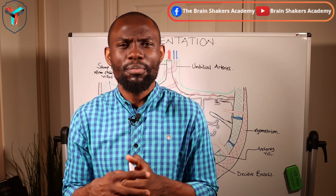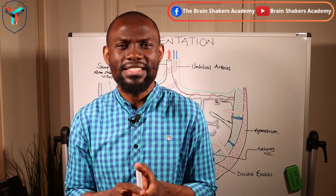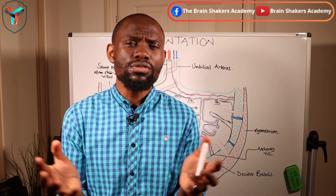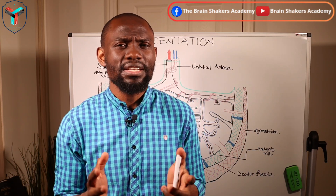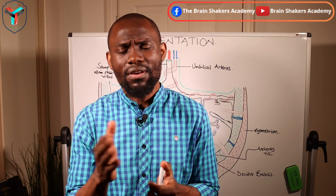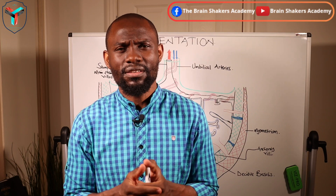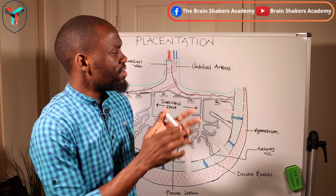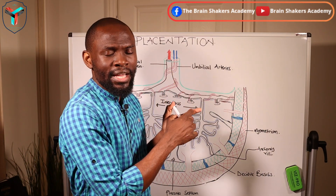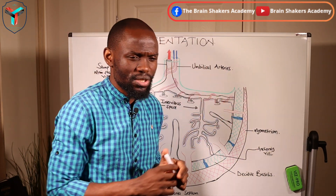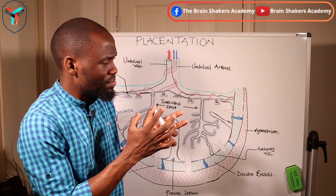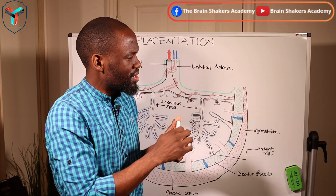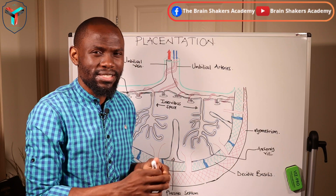Now let's look at what happens in the process of placentation or the formation of the placenta. After fertilization has occurred, around the seventh day or so, the blastocyst is going to be in the uterine lining. It would have already come into the uterus, and as the blastocyst comes into the uterus it has a lining around it which we call the trophoblastic layer.